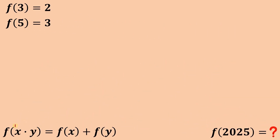All right, so given the function f(x times y) equals f(x) plus f(y), and also given that f(3) equals 2 and f(5) equals 3, the main goal is to find the numerical value of f(2025).